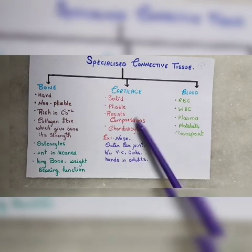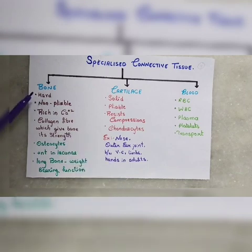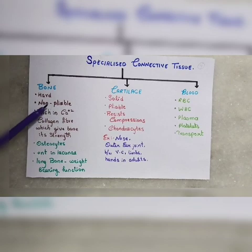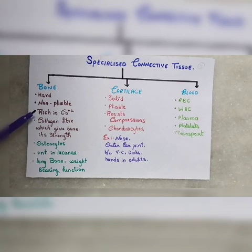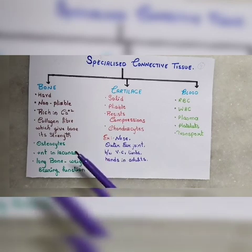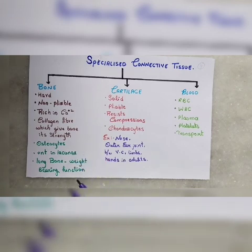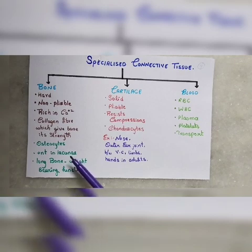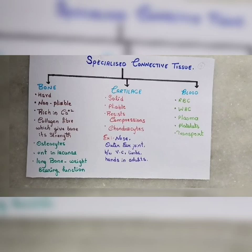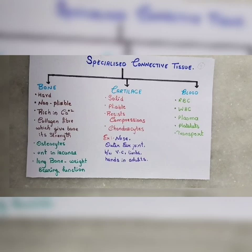Next is bone. Bone is non-pliable, meaning it is rigid. It contains calcium and collagen fibers. These fibers support and strengthen the bone. Bone cells are called osteocytes. Long bones are weight-bearing bones. This is all about specialized connective tissue.